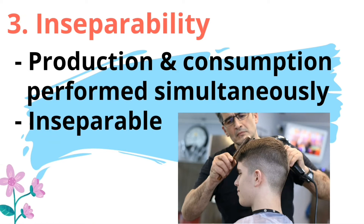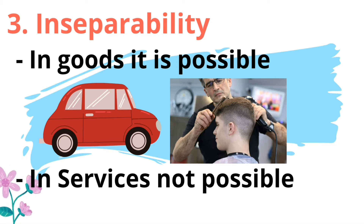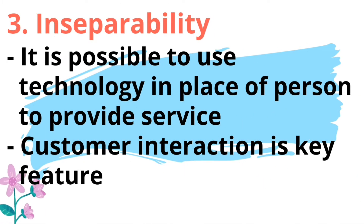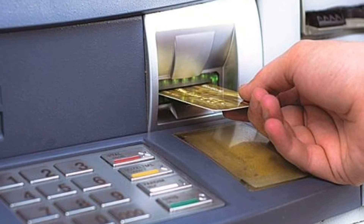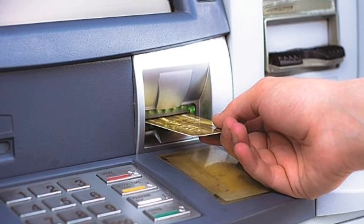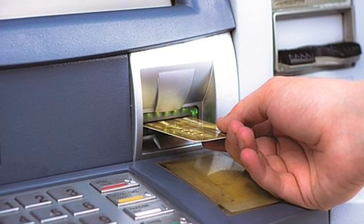Another important feature of service is Inseparability. It means production and consumption of services are simultaneously performed, which makes them inseparable. In the case of goods, it is possible to manufacture today and sell after one month, but that is not possible in services — services have to be consumed as and when they are produced. The service provider can use technology in place of a person, but customer interaction remains key. For example, an ATM machine may replace a bank clerk for withdrawal of cash or deposit of a check, but the presence and interaction of the customer is still mandatory.